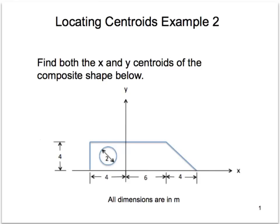This is locating centroids, example 2. We'll be finding the X and Y centroid of this shape. This shape is a little bit different from the previous one. We actually have this circle which has been removed, so we'll go through the process of calculating that.